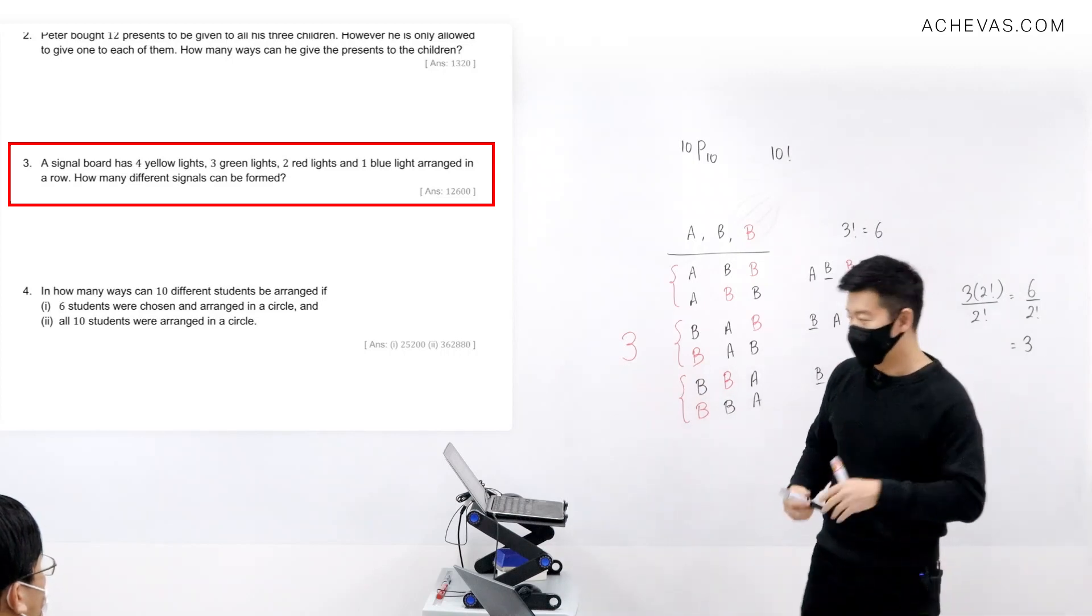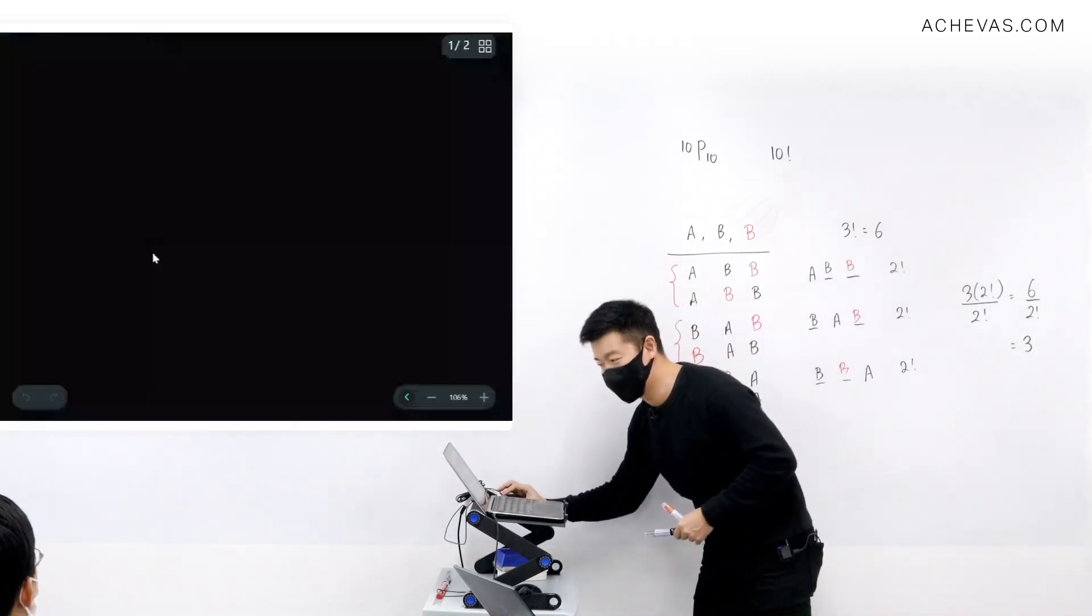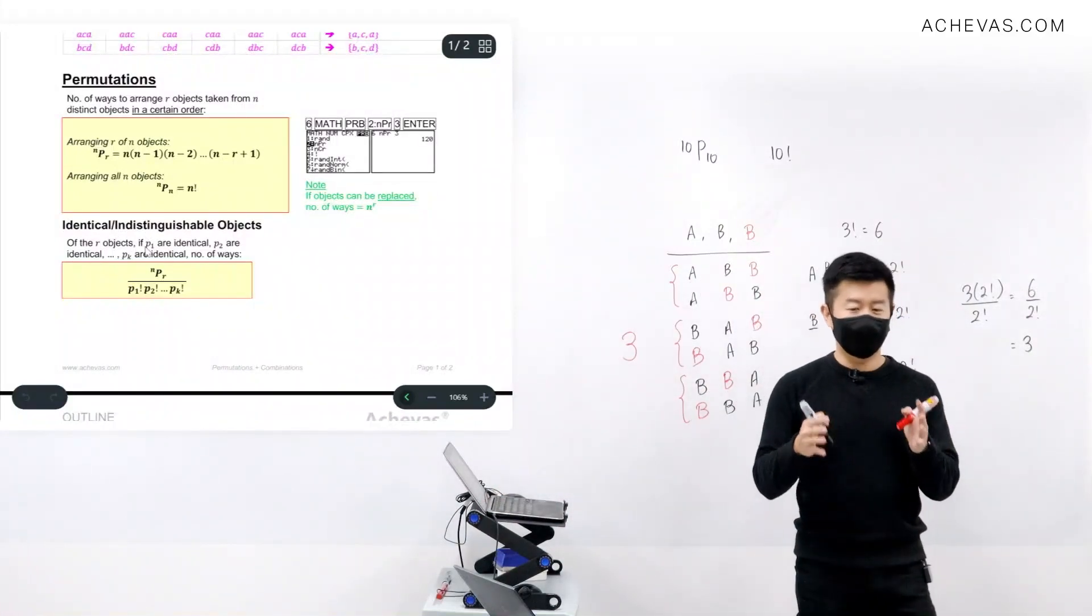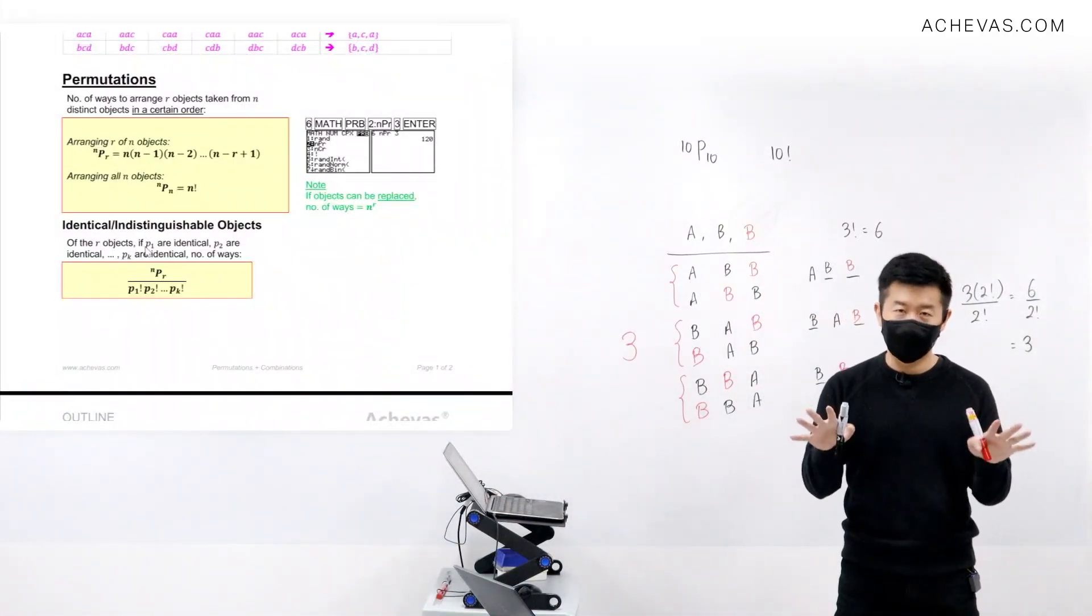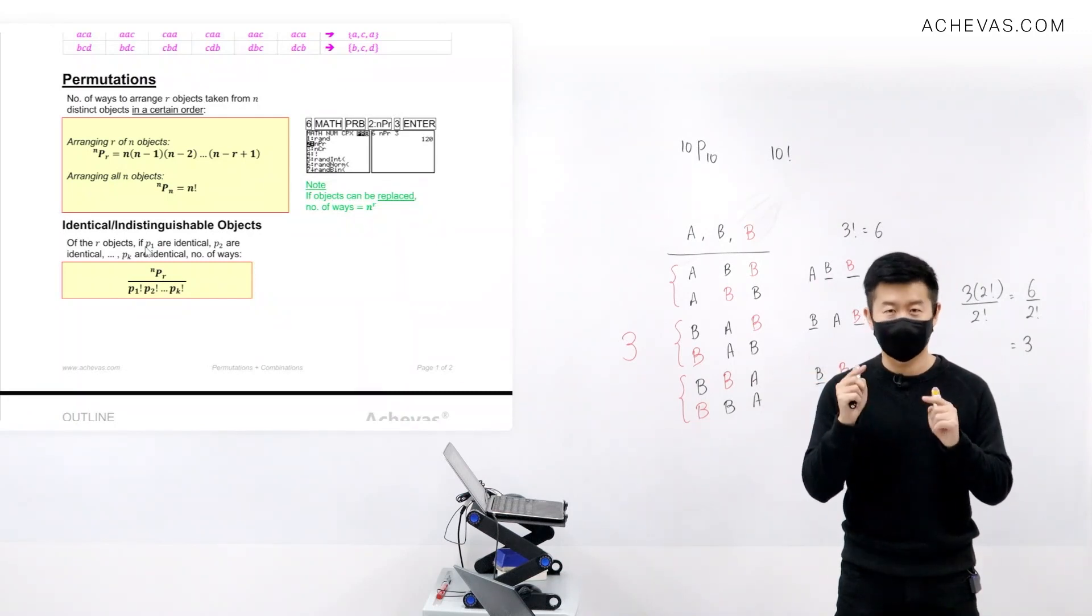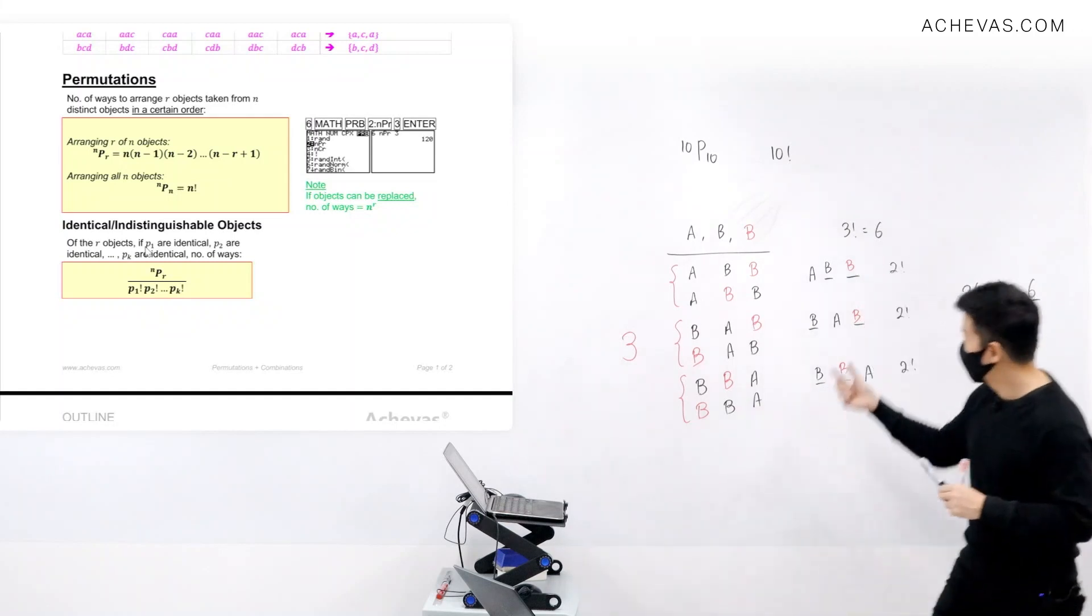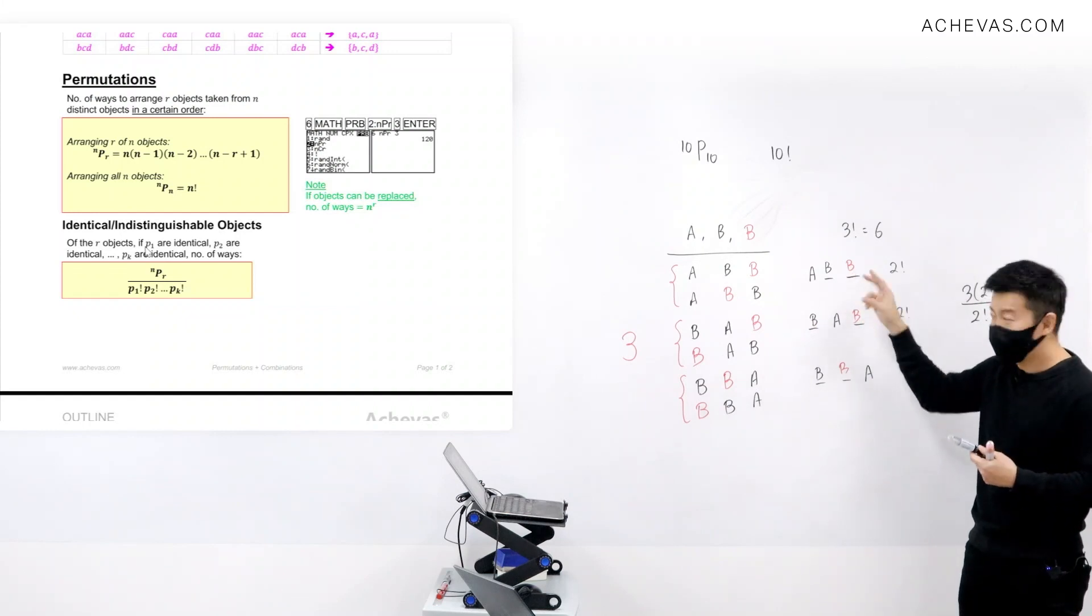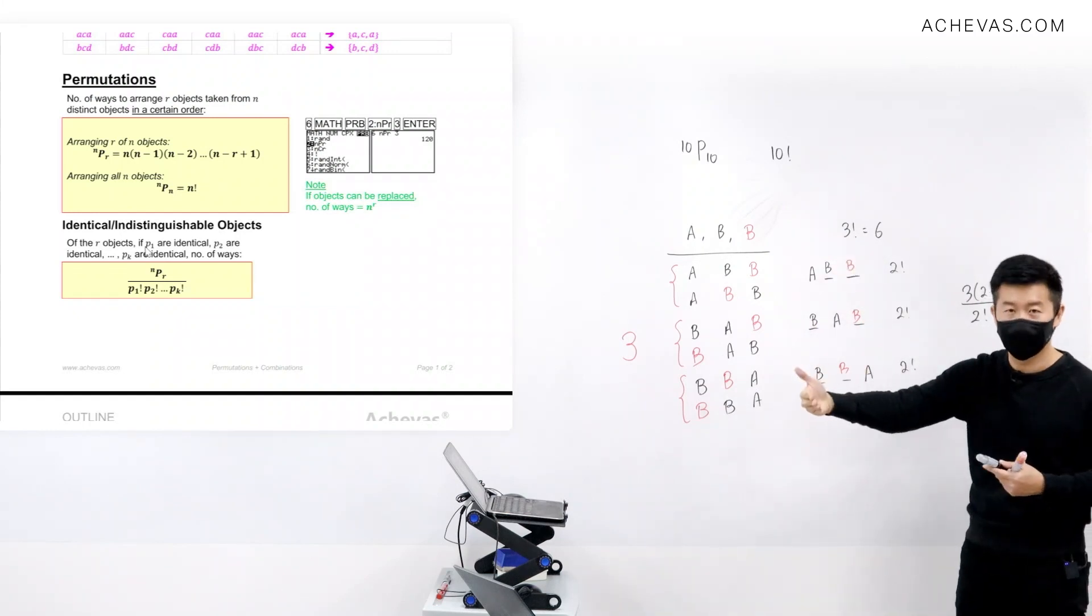And now at least number-wise it becomes correct. This gives us our second building block, which is: when we are dealing with identical objects like here, if we are dealing with objects that are seen to be identical or indistinguishable one from another, then we just need to divide by the number of identical objects factorial, because we are trying to remove those objects that we previously thought they are different so we permutated them, but they're actually the same, so I remove my permutation for them.